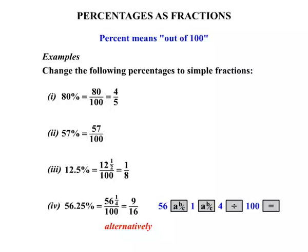There is an alternative way though. Let's check this one out. 56.25%. On your calculator, try this: 56.25 divided by 100, press equals. Now you should get a decimal answer at this stage, 0.5625.